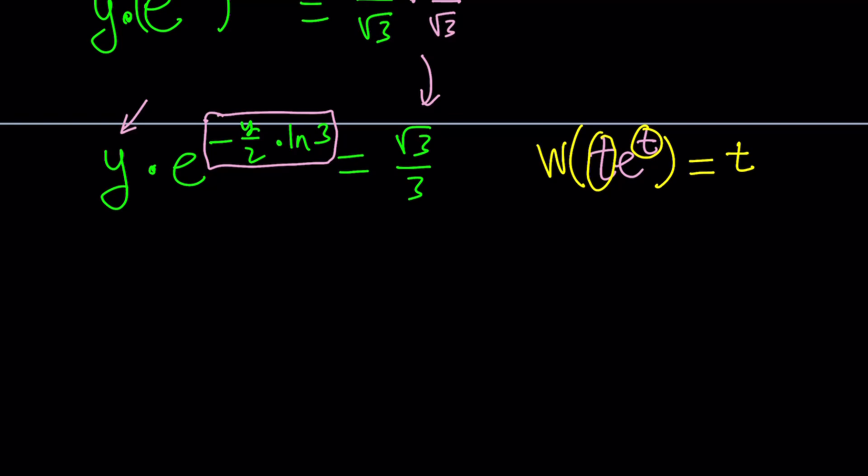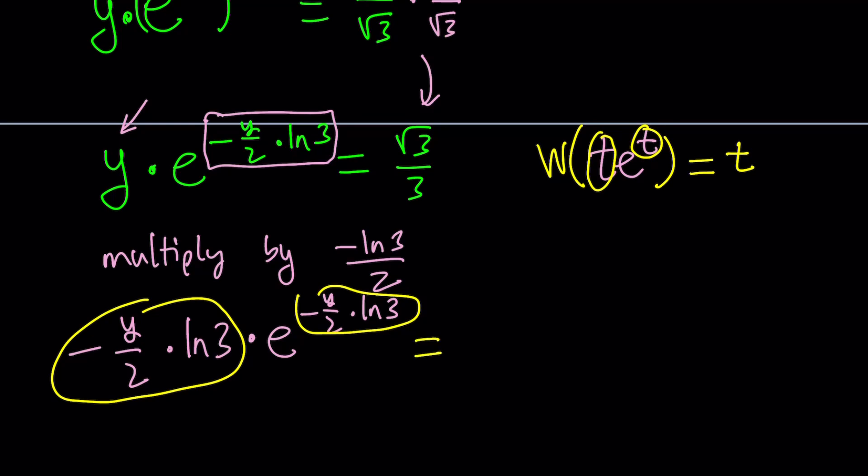Multiply by negative ln 3 over 2. That's what I need, right? So when I do multiply both sides by that, I get negative y over 2 times ln 3 times e to the power negative y over 2 times ln 3. Now we got our T's, right? This is my T and that's my T. And I'm going to go ahead and apply the Lambert's W function. But let's go ahead and multiply root 3 over 3 by the same thing, which is negative ln 3 over 2. And that gives us negative root 3 ln 3 over 6.